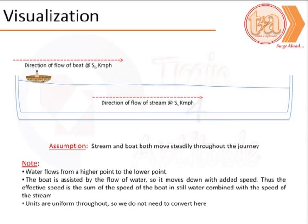The boat is assisted by the flow of the water, and thus the effective speed is nothing but the sum of the boat and the stream. The units are uniform here in the problem, so we do not need to convert them. The underlying assumption in this problem is that the stream and the boat maintain their speed throughout the journey.